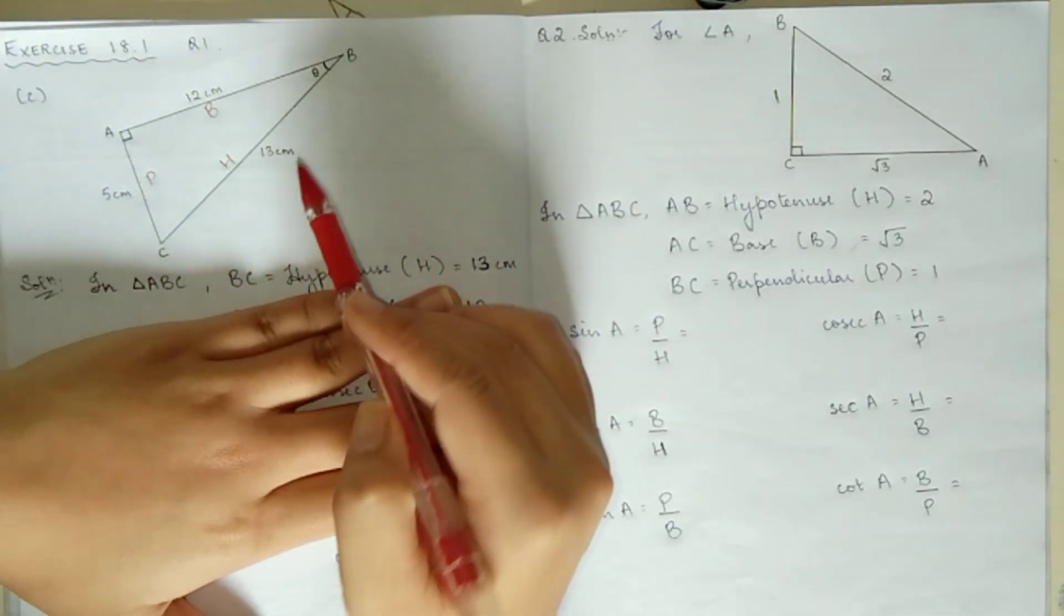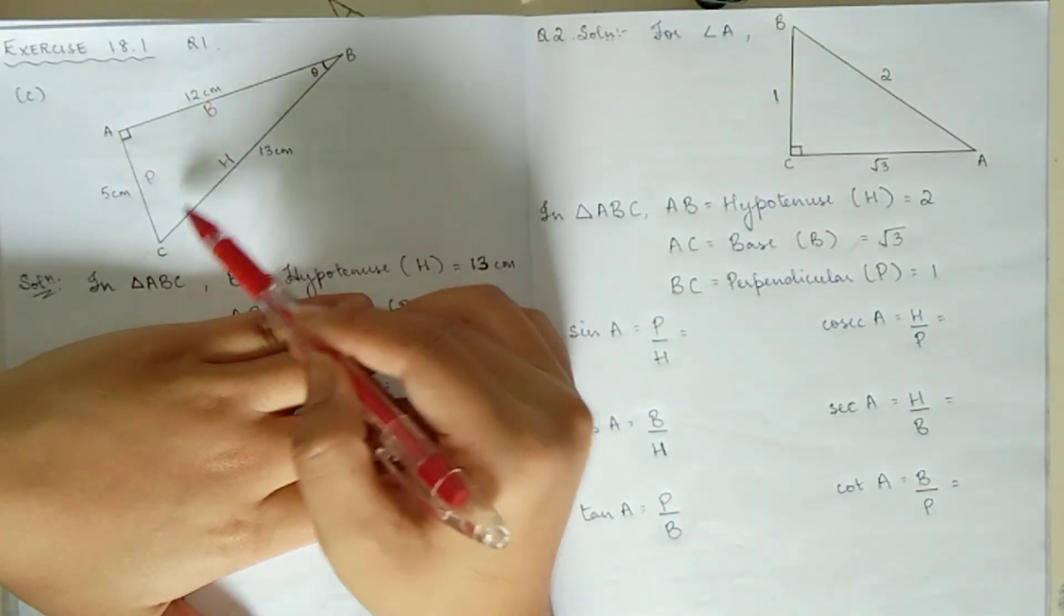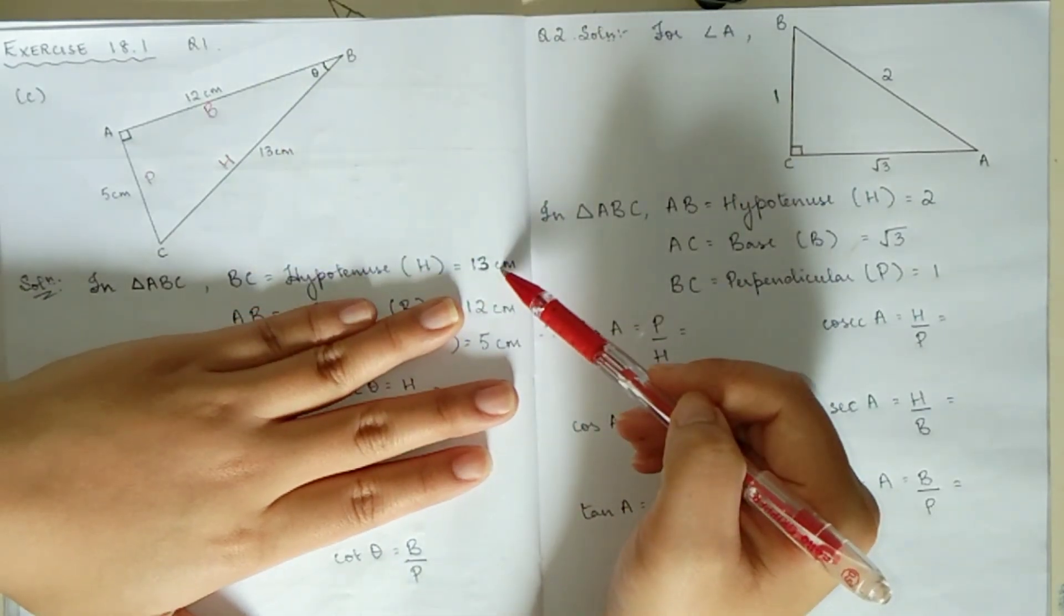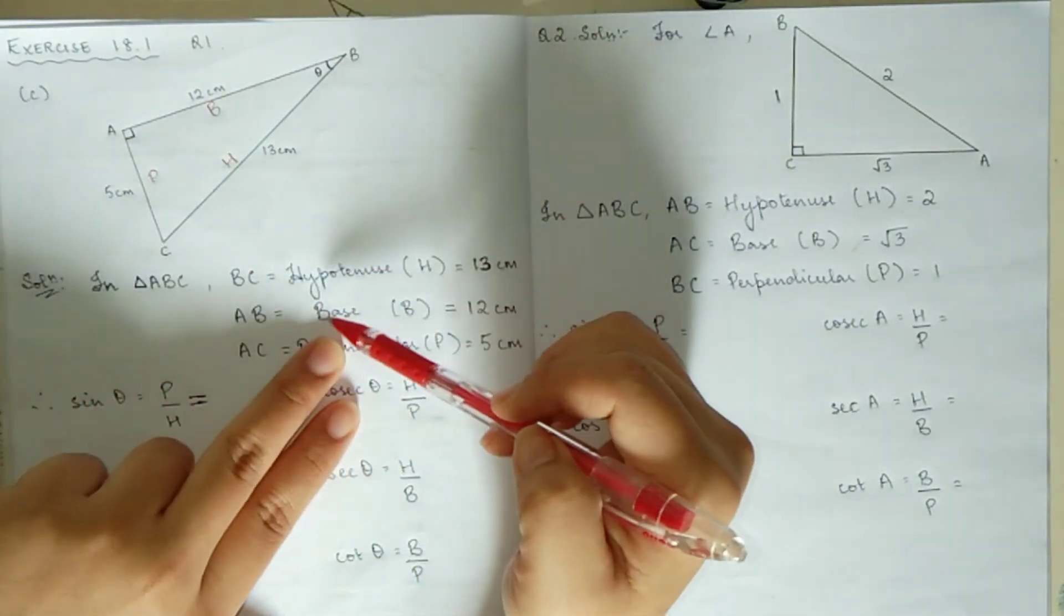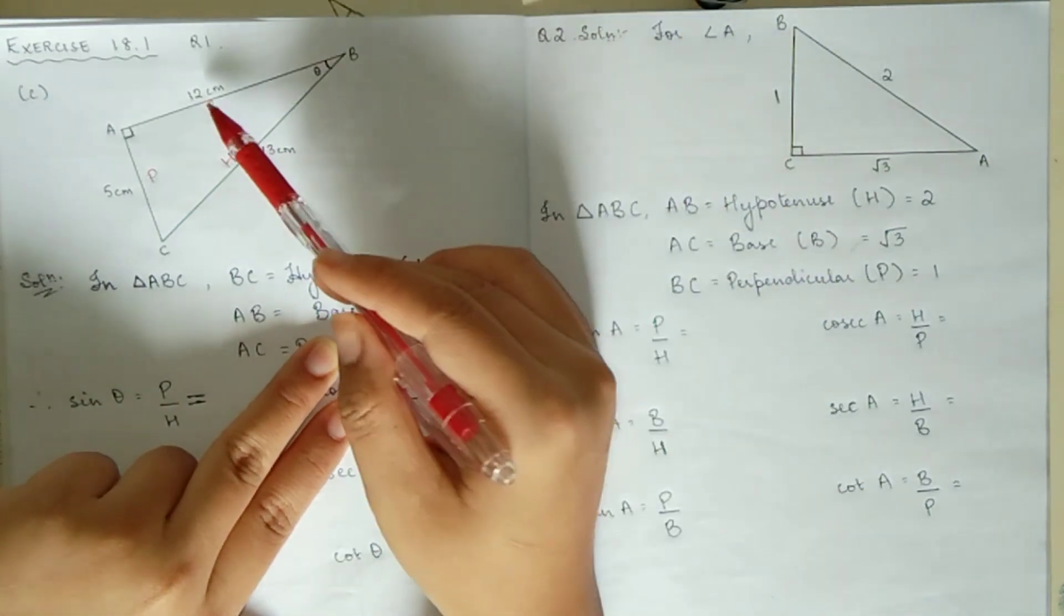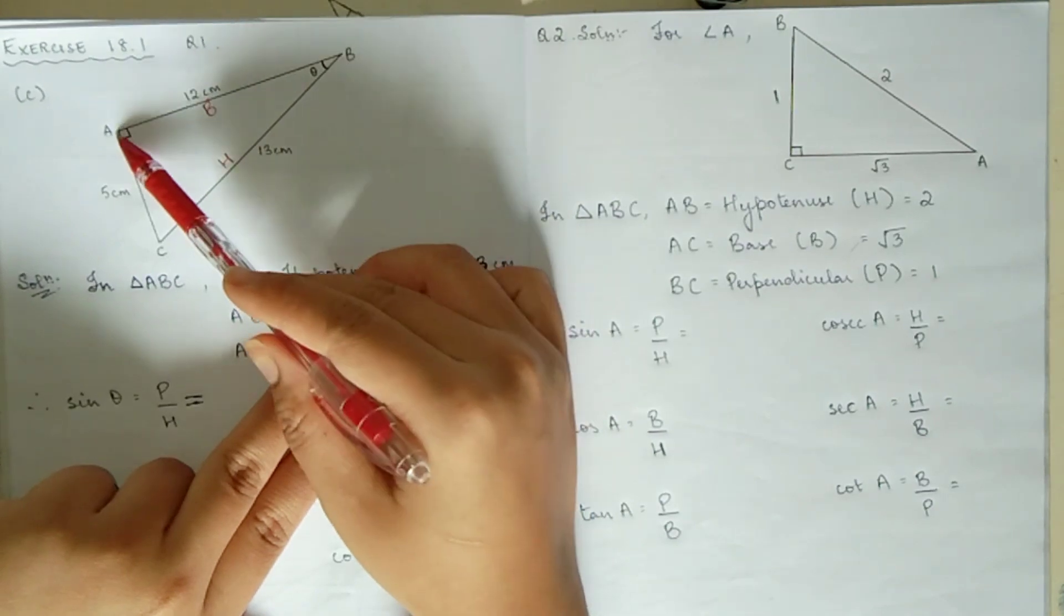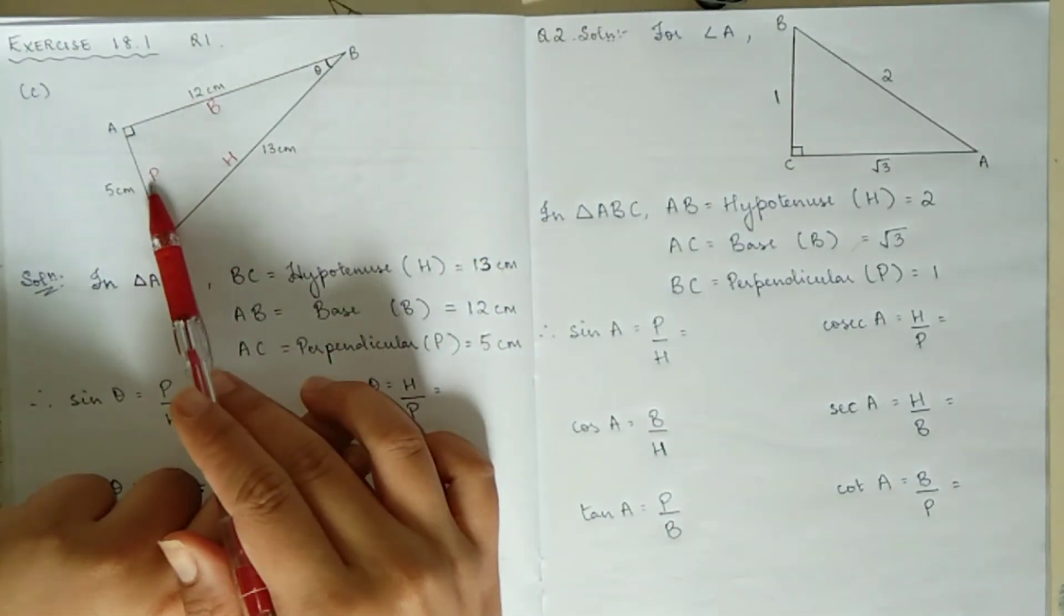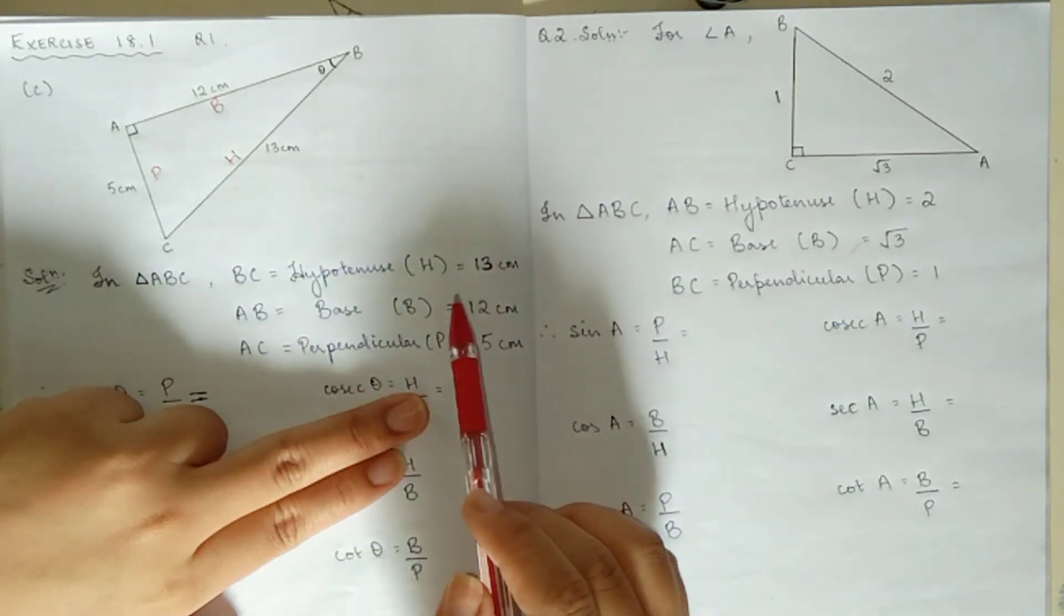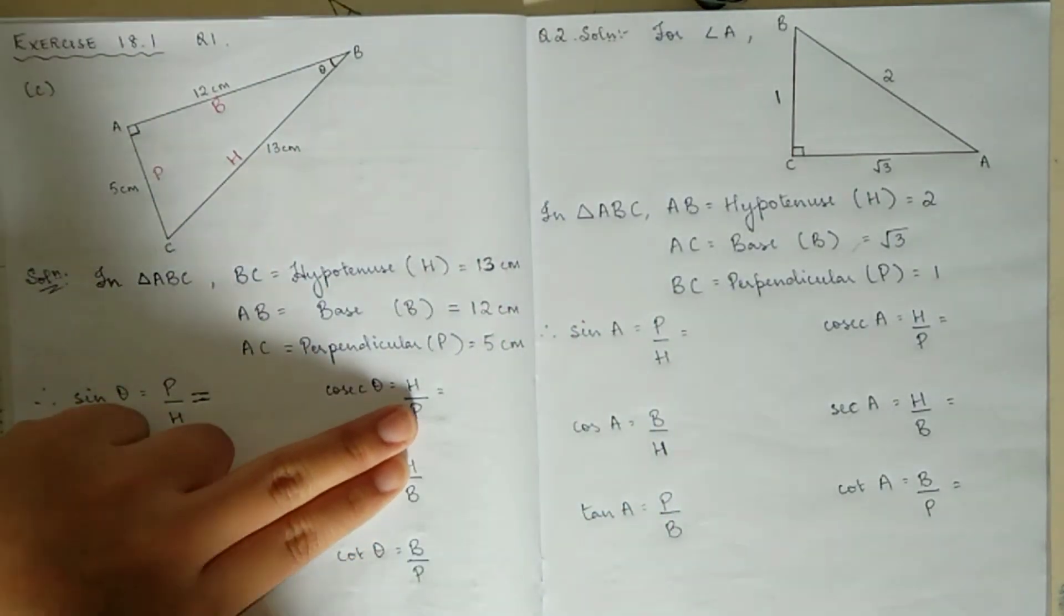Now in triangle ABC, BC is the hypotenuse at 13 cm, AB is the base at 12 cm, and AC is the perpendicular at 5 cm.